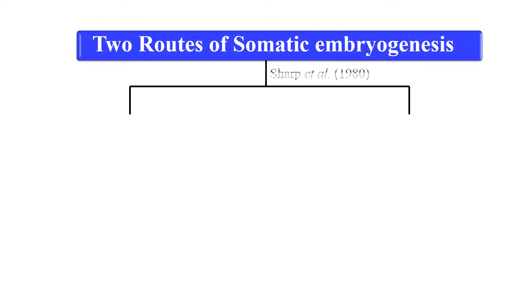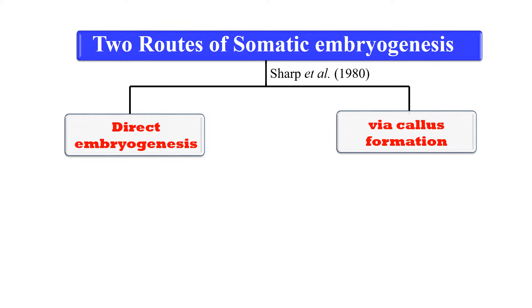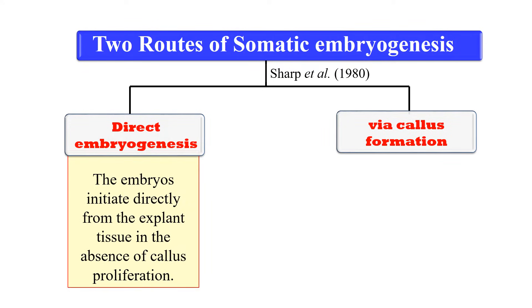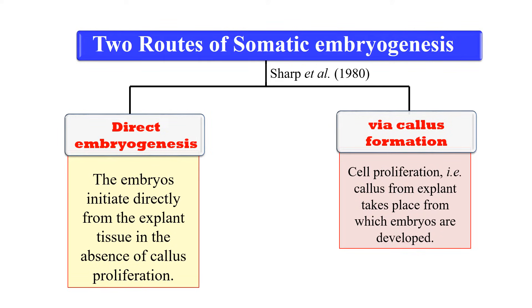Sharpe et al. gave two routes by which somatic embryogenesis can be carried out: one is direct embryogenesis and the other is via callus formation, or indirect embryogenesis. In direct embryogenesis, the explant is directly changed into embryo — there is no callus phase. While in indirect embryogenesis, callus is first formed from the explant, and then the embryo is developed from this callus.